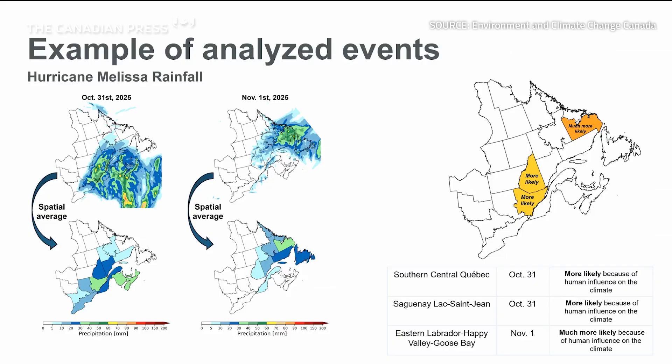For the Hurricane Melissa rainfall, the threshold was surpassed over three regions, resulting in extreme precipitation events being detected on October 31st and November 1st over south-central Quebec, Saguenay-Lac-Saint-Jean, and eastern Labrador-Happy Valley-Goose Bay.